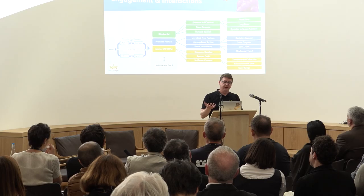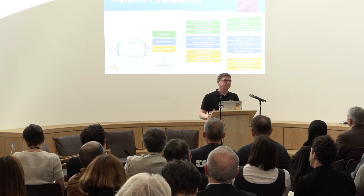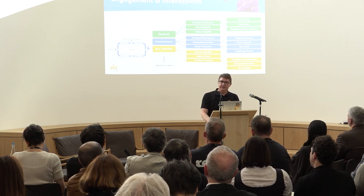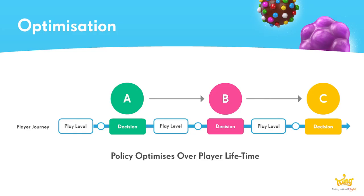Given all these interaction points and all the different things we can do, we can't possibly hand-curate that — so we rely very heavily on data and artificial intelligence solutions. What we're doing is essentially optimizing that experience over the lifetime of a player, which might be a day or it might be 10 years. We have players who've been playing Candy Crush for over 10 years. This is a reinforcement learning problem: optimizing a policy over time to give each player the best possible experience while achieving the best possible commercial outcome.